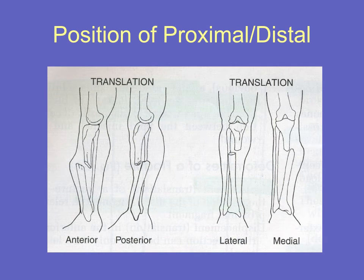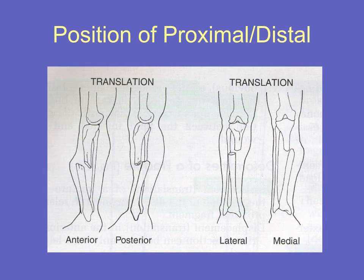Describing translations can be a little complicated. In the US, they use a different nomenclature — they tend to describe where the proximal part is in relation to the distal part — whereas in the UK, we describe displacement considering the distal part and where it has gone relative to the proximal part. In the picture on the left, the distal tibia has moved anteriorly compared to the proximal tibia, so this is anterior translation. In the second picture, where the distal tibia lies posterior to the proximal tibia, this is posterior translation. The third picture shows lateral translation, and the fourth shows medial.